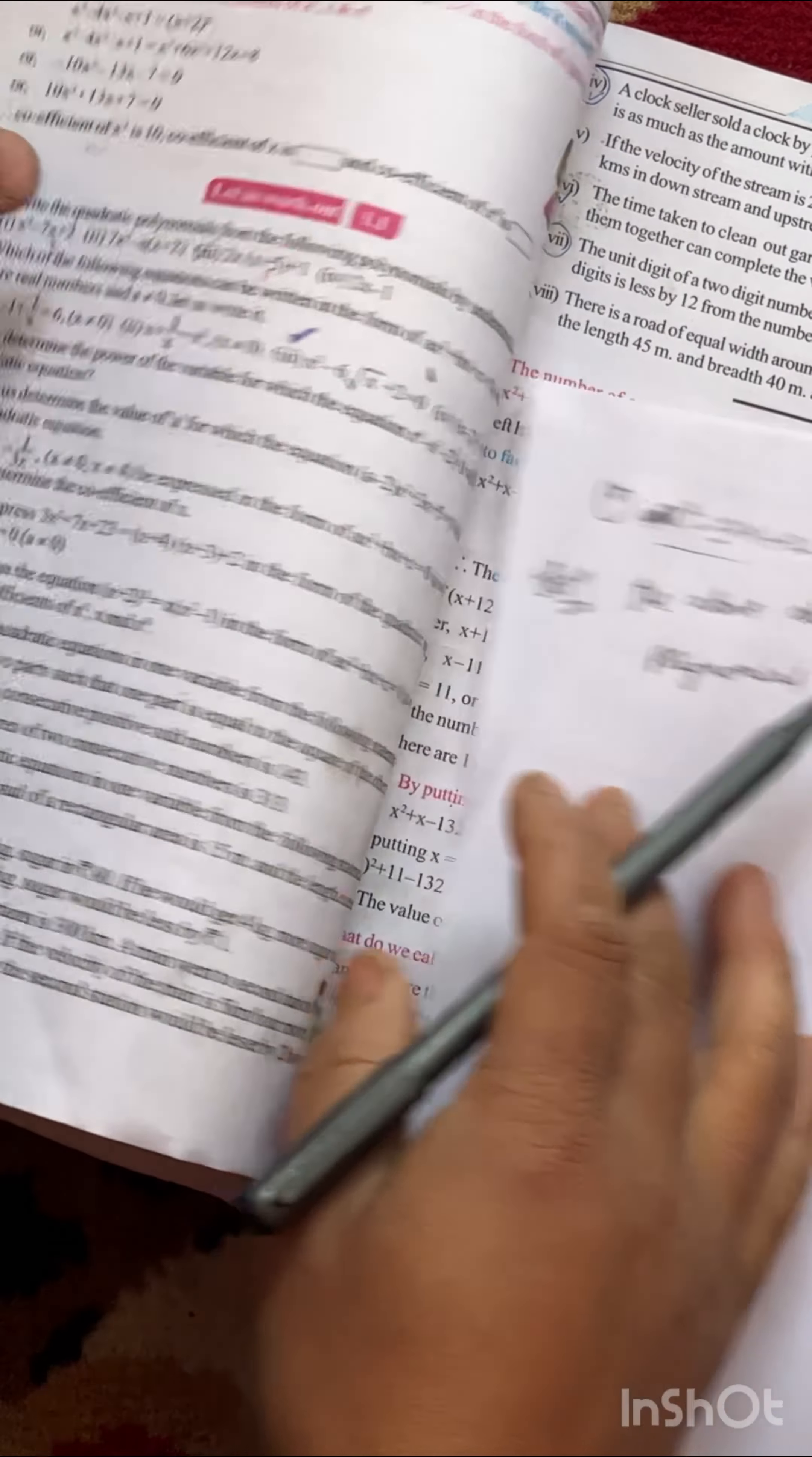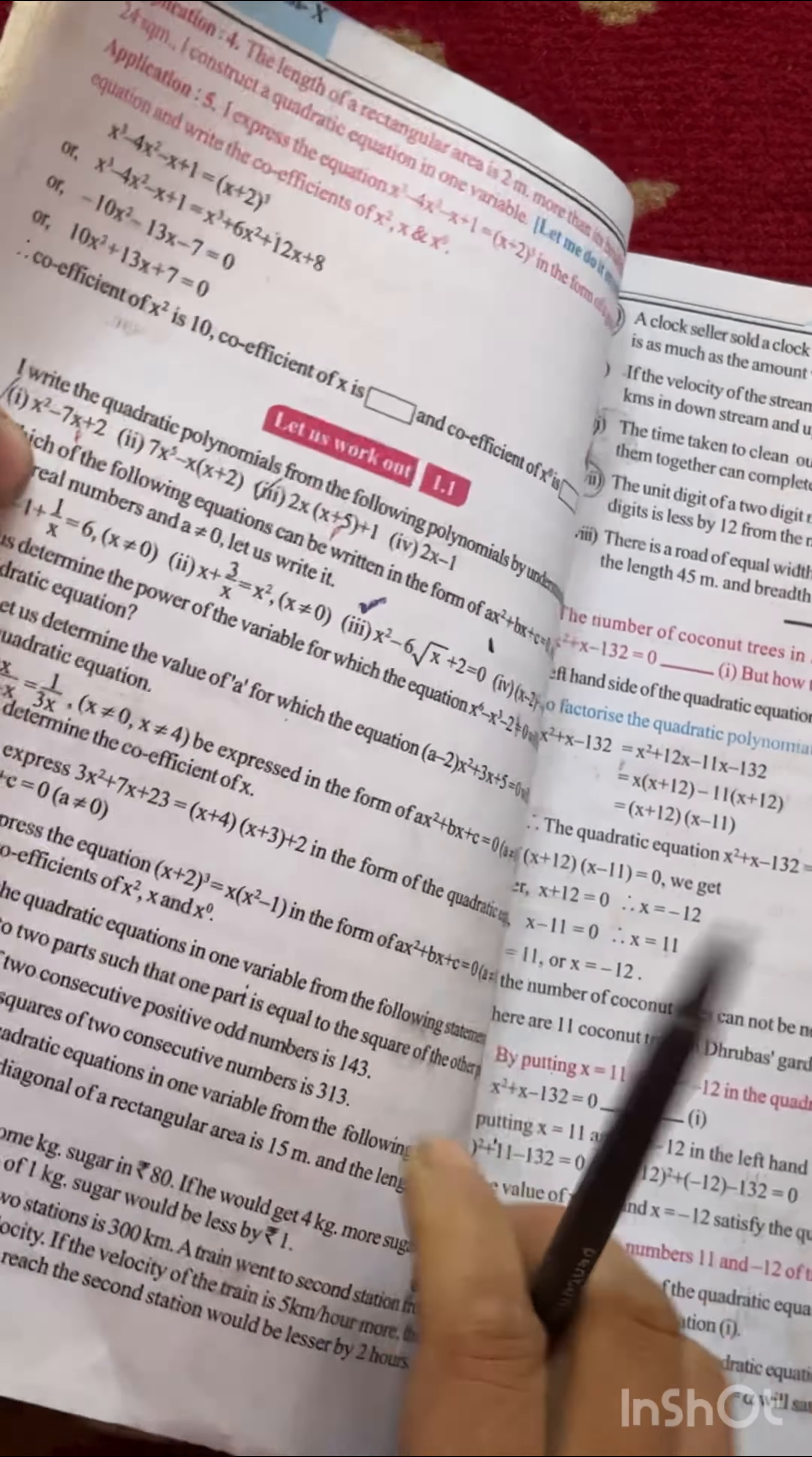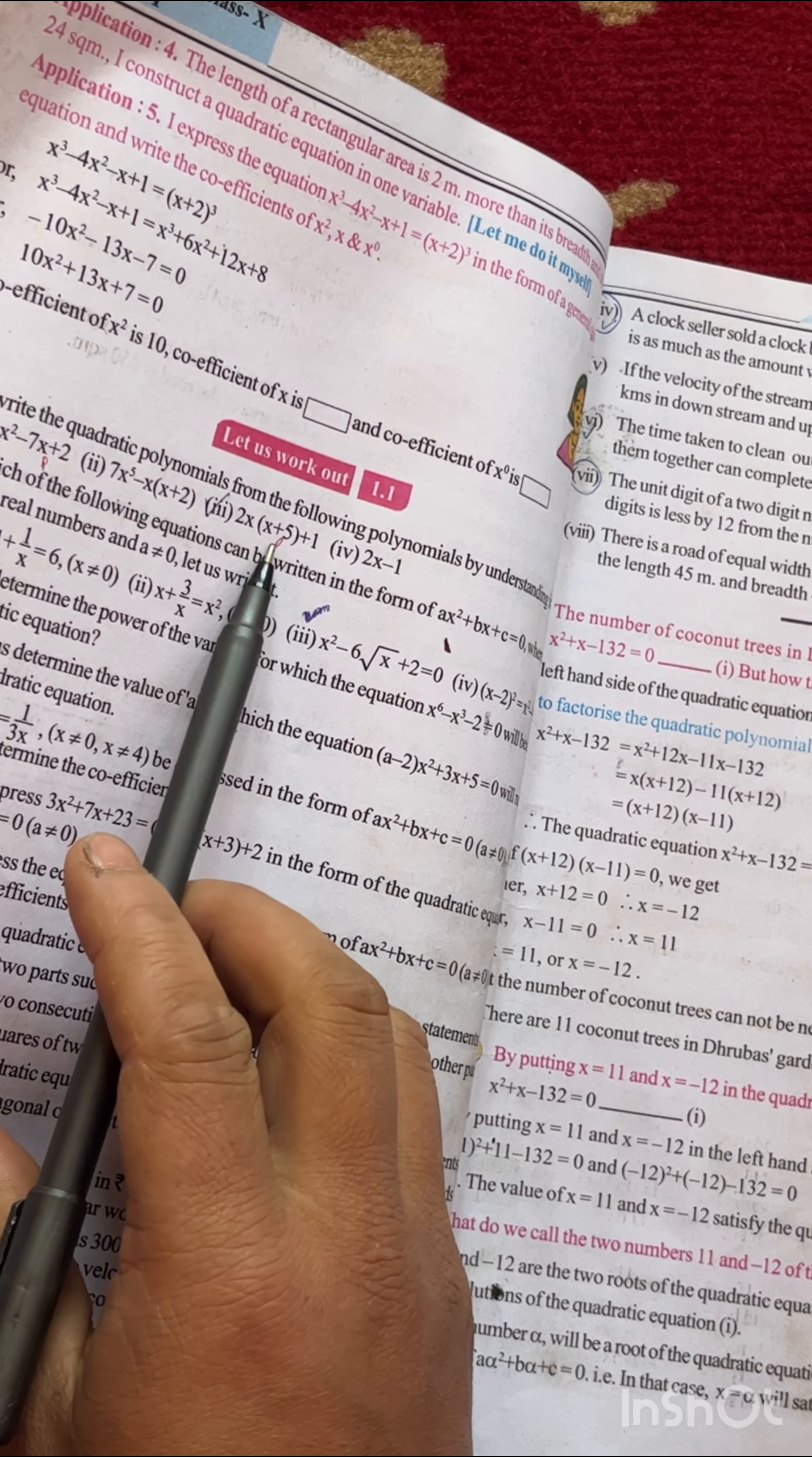Number 2: x to the power 5. x⁵ is not a quadratic polynomial because for a quadratic polynomial the highest power should be 2. So this algebraic expression is not a quadratic polynomial.